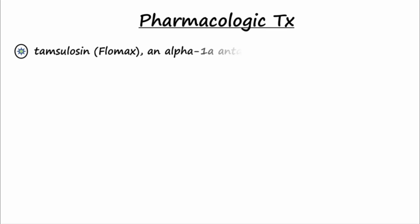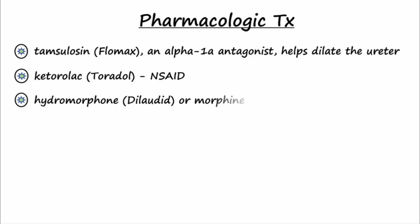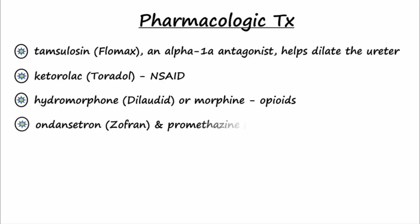For ureterolithiasis, tamsulosin, an alpha-1a antagonist, can be used to help dilate the ureter and help the stone pass. A strong NSAID like ketorolac or opioids such as hydromorphone or morphine may be used for the intense colicky pain. Anti-nausea drugs like ondansetron and promethazine may be used to treat nausea and vomiting.